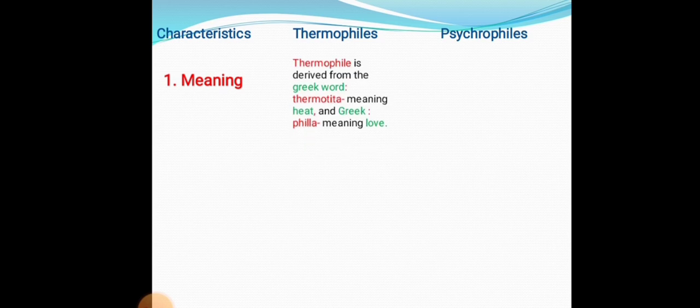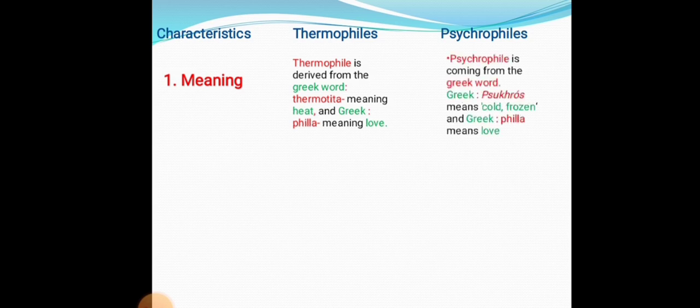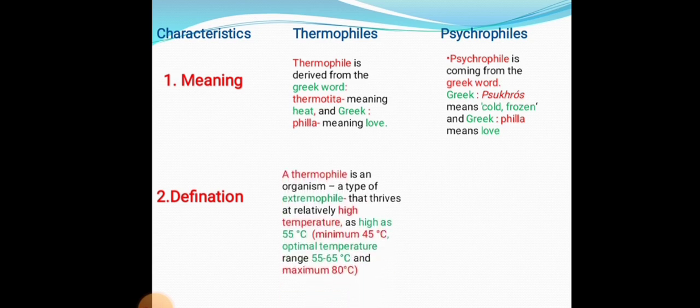First, we will discuss the difference in meaning. Thermophile is derived from the Greek word 'thermotita', meaning heat, and the Greek 'phila' meaning love — so thermophiles are heat-loving organisms. In the case of psychrophiles, 'psychros' means cold or frozen and 'phila' means love, so psychrophiles are cold-loving organisms.